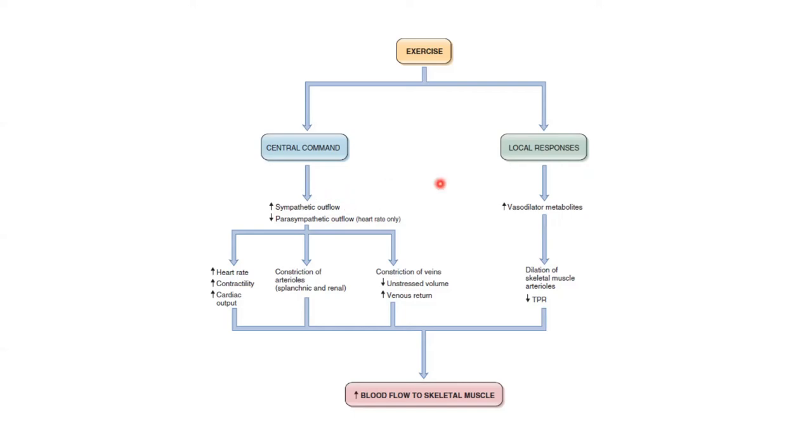Also in this flowchart, you have the local responses in this same flowchart as the central command is there. So all this CNS business, he has given very nicely, this is from Costanzo BRS. He has taken this local responses that we read under regional circulations, he has integrated this here. So to give you a bigger picture of how during exercise blood flow to the skeletal muscle is improved and at the same time, not shown here, but at the same time you have stability in blood pressure, it doesn't fluctuate much.